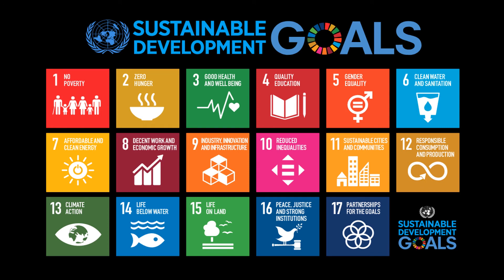The 17 Sustainable Development Goals are: no poverty, zero hunger, good health and well-being, quality education, gender equality, clean water and sanitation, affordable and clean energy, decent work and economic growth, industry innovation and infrastructure, reduced inequality, sustainable cities and communities, responsible consumption and production, climate action, life below water, life on land, peace justice and strong institutions, and partnership for the above goals.